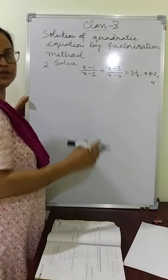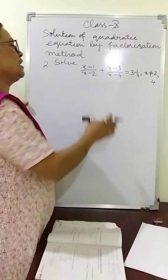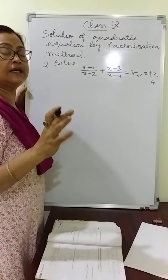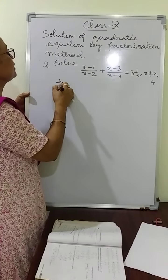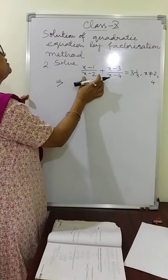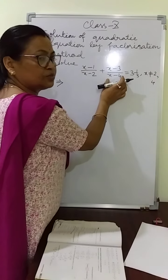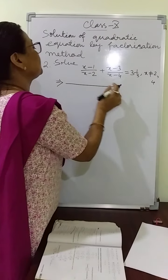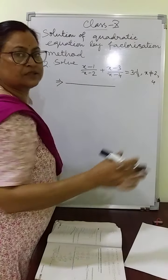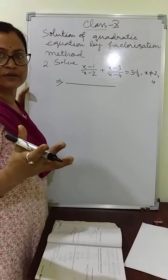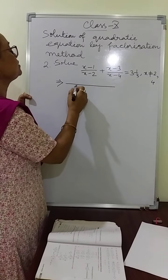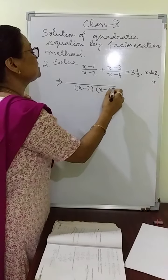At first what we do is simplify this, like the simplification of rational expression. After simplification we will get the quadratic equation, then we solve it. How do we simplify? We take the LCM of the denominators. What is the denominator here? x minus 2 and x minus 4. There is no common factor, so the LCM will be x minus 2 whole into x minus 4.